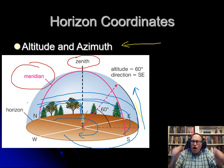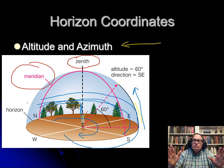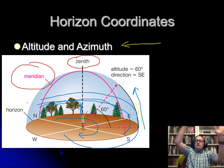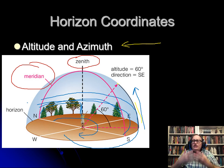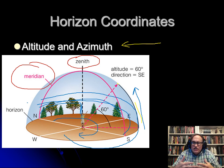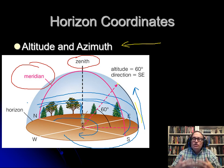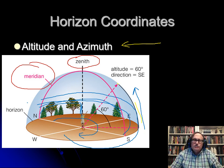The problem is all the coordinates change over time — as stars rise and set, the altitude and azimuth change. It would be really nice if we had a coordinate system that did not change. And it turns out we do — it's called celestial coordinates, or right ascension and declination. That will be our next topic.